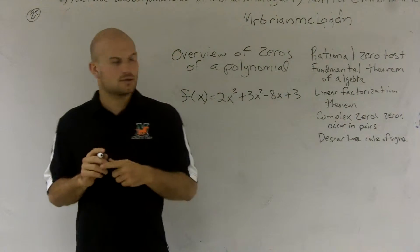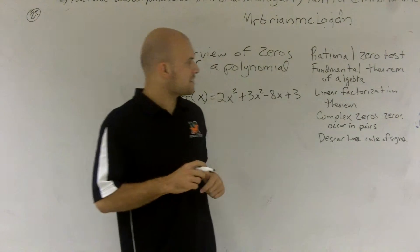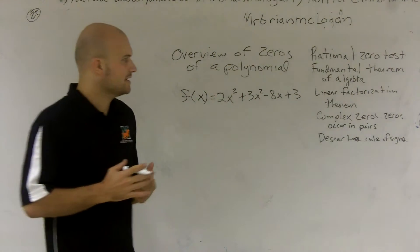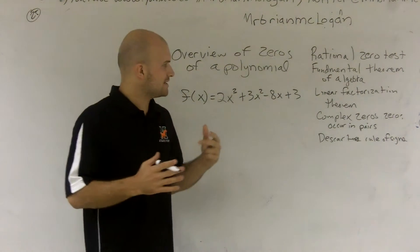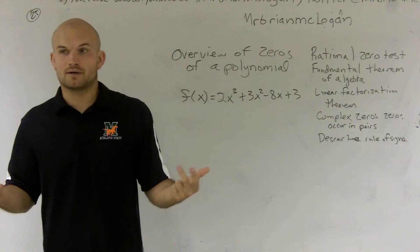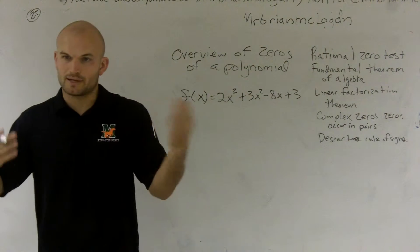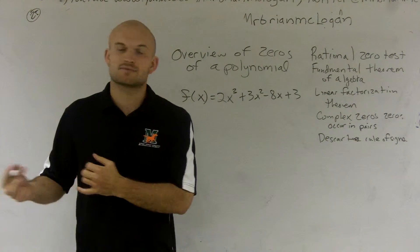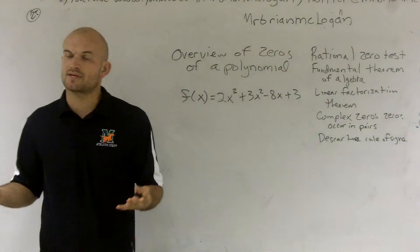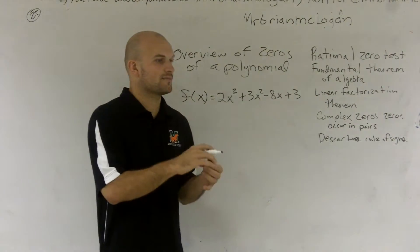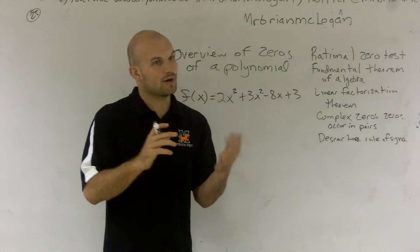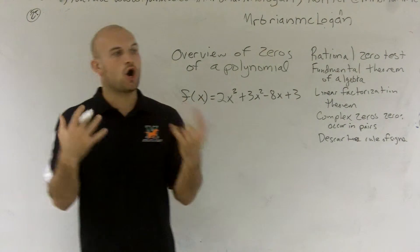First thing we're going to talk about is the Fundamental Theorem of Algebra. What the Fundamental Theorem of Algebra is telling us, in layman's terms, is that for every polynomial that has a degree greater than 1, there's at least one factor in the complex number system. Since we've learned about complex numbers, there's at least one factor.